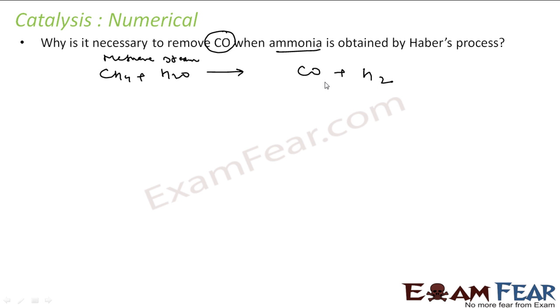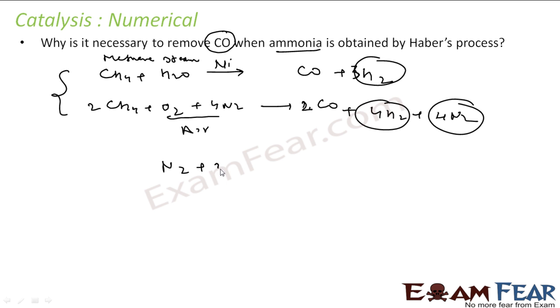Methane and steam in the presence of air with nickel catalyst gives carbon monoxide and hydrogen. Another reaction is methane reacting with oxygen and nitrogen from air to give carbon monoxide and hydrogen and ammonia. In these two processes, we're getting hydrogen and nitrogen, which react to form ammonia in the final step.